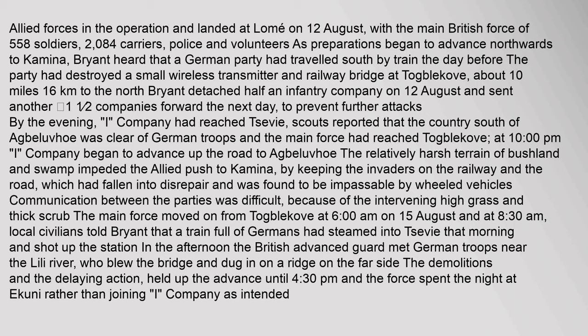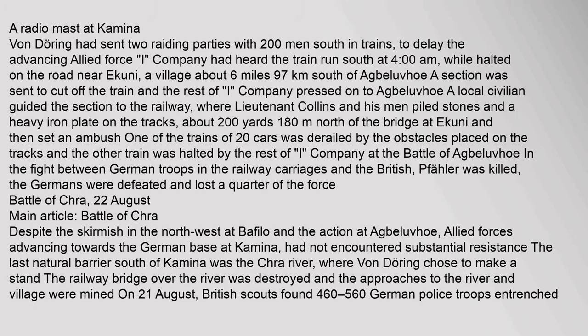Bryant heard that a German party had travelled south by train the day before. The party had destroyed a small wireless transmitter and railway bridge at Togblokov, about 10 miles away. Von Doering had sent two raiding parties with 200 men south in trains to delay the advancing Allied force. A company had heard the train run south at 4 am while halted on the road near Ikuni, a village about 6 miles away.